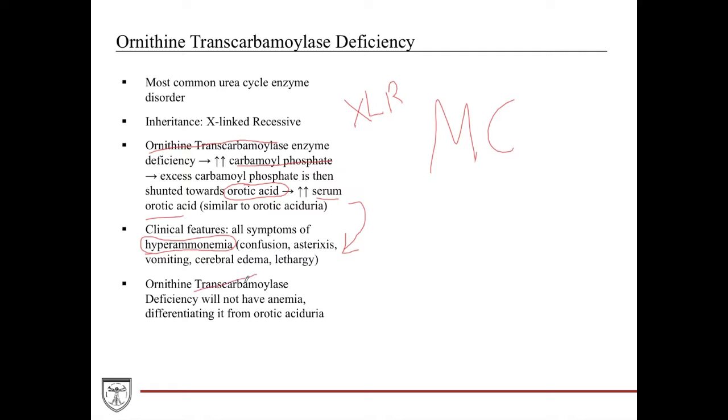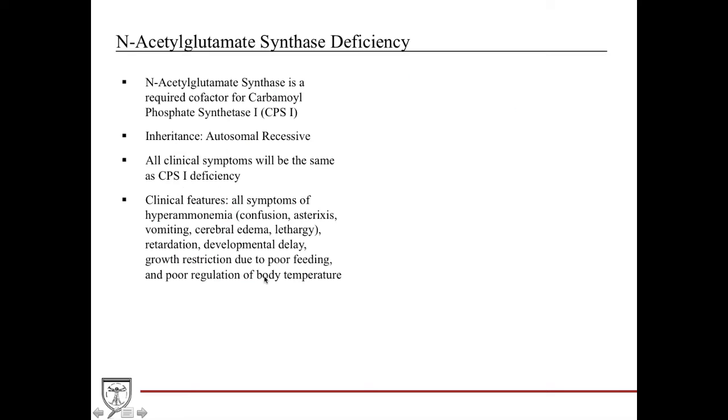The biggest difference between ornithine transcarbamylase and orotic aciduria is that you will not have anemia. This is tied into the hematologic processes, but you will not have anemia with ornithine transcarbamylase, and that is how you differentiate the two on a test.